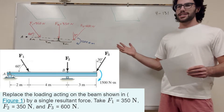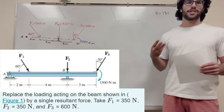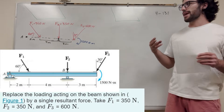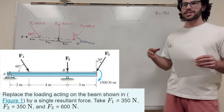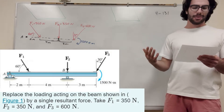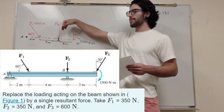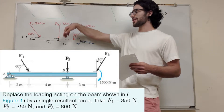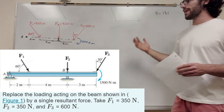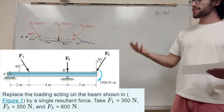Let's look up again. So we've got this moment problem here, and it has three parts. We're going to first find the magnitude of the forces, then find the angle at which that force acts, and then find the distance at which we can place the resultant force so it produces the same effect as the original system.